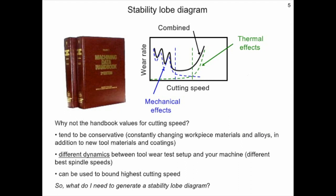The reason these best speeds do not necessarily correspond to the handbook values for cutting speed are that the handbook values tend to be conservative, and there are different dynamics between the toolware test setup used to identify the best spindle speeds. However, these handbook values can be used to bound the highest cutting speed. So, the question we may ask is, what do I need in order to generate a stability lobe diagram?